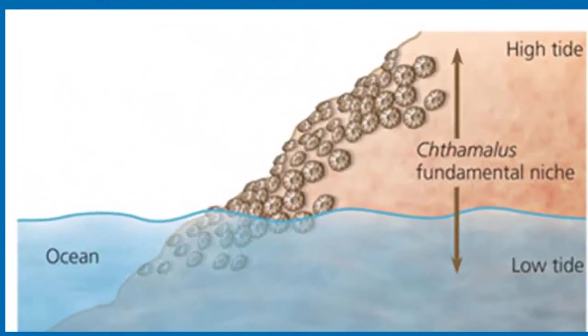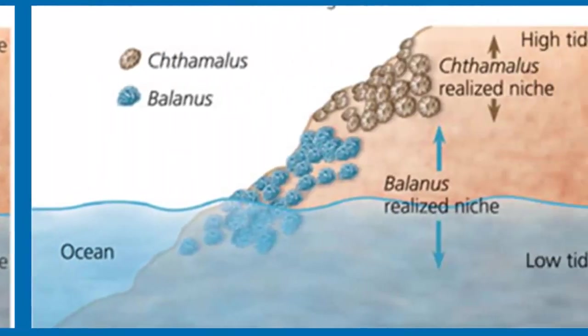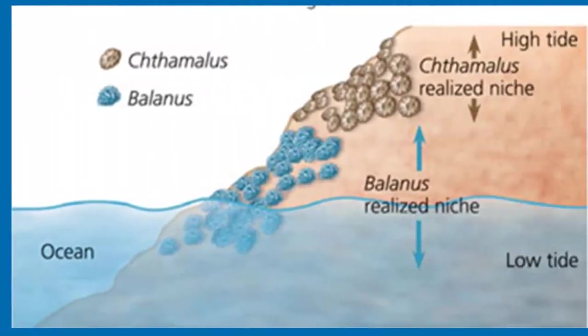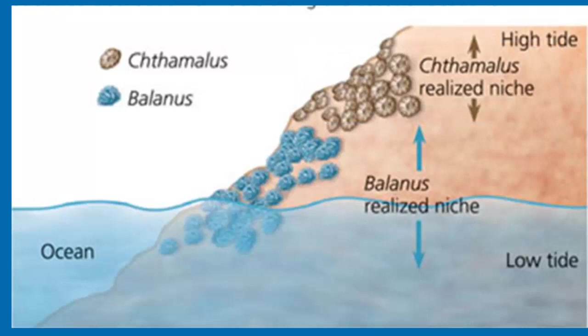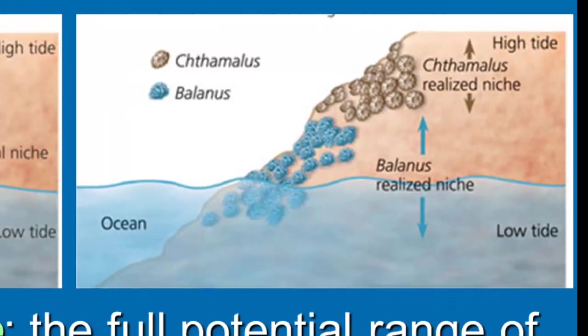For example, there's a barnacle species called Chthamalus that could fundamentally utilize resources throughout any part of an intertidal zone. Unfortunately, when a second species of barnacle called Balanus is introduced, Chthamalus is outcompeted in the lower tidal area, forcing it to only realize a niche in the high tide zone. The reason it can exist there is that it is more able to resist drying out, whereas Balanus requires an increased amount of moisture. As a result, Chthamalus's realized niche is much smaller than its fundamental niche.